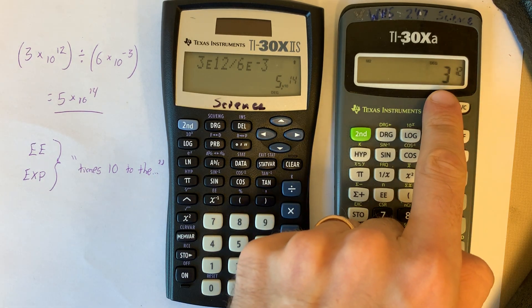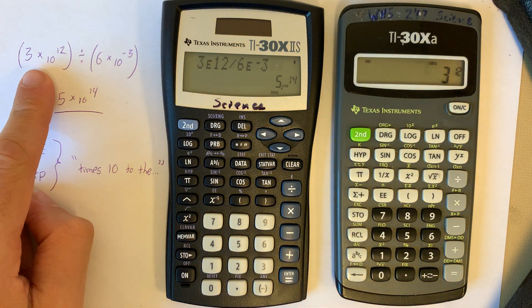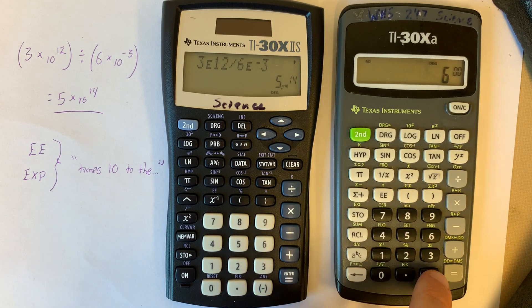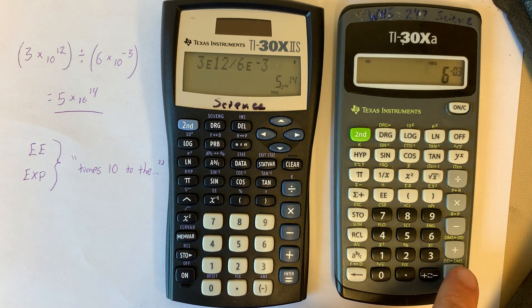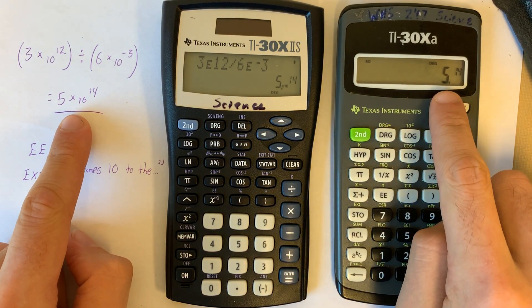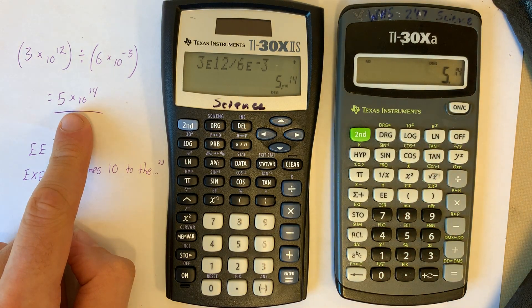This is how it's displayed on this calculator. It looks like 3 to the 12th, but it's not. It's 3 times 10 to the 12th. Divided by 6 EE negative 3 equals, and I get the same answer. It looks like 5 to the power of 14, but it's written like this, 5 times 10 to the 14th.